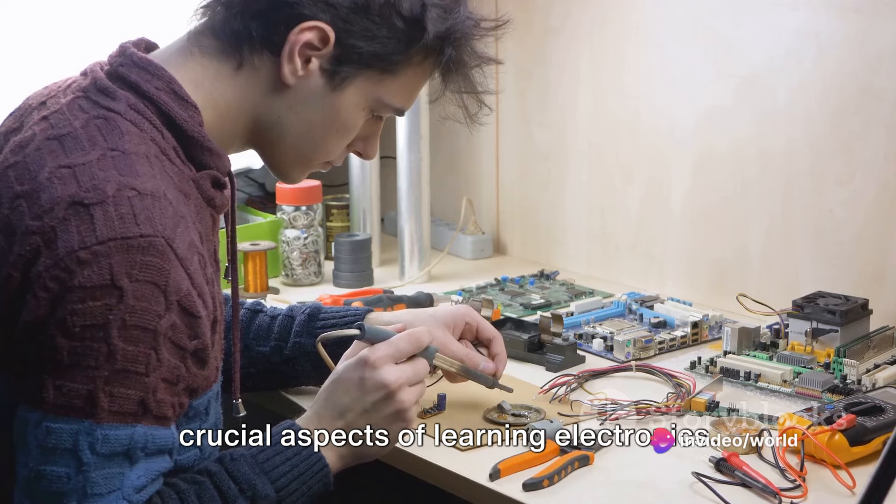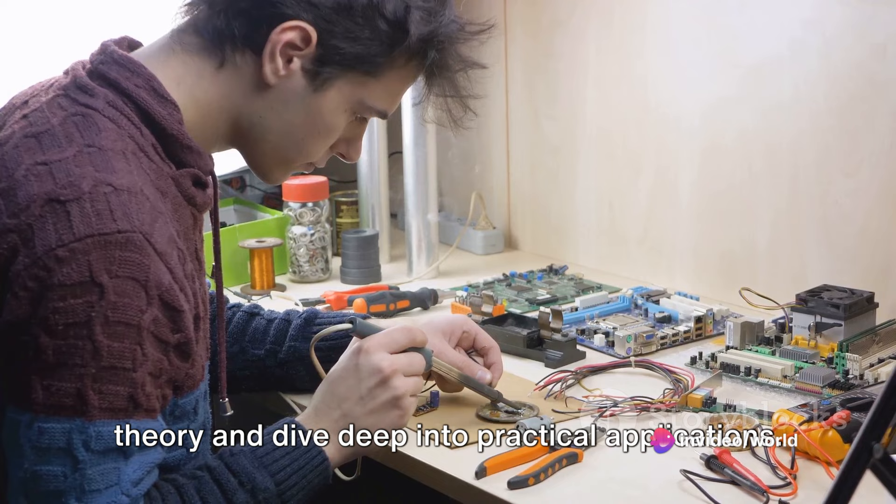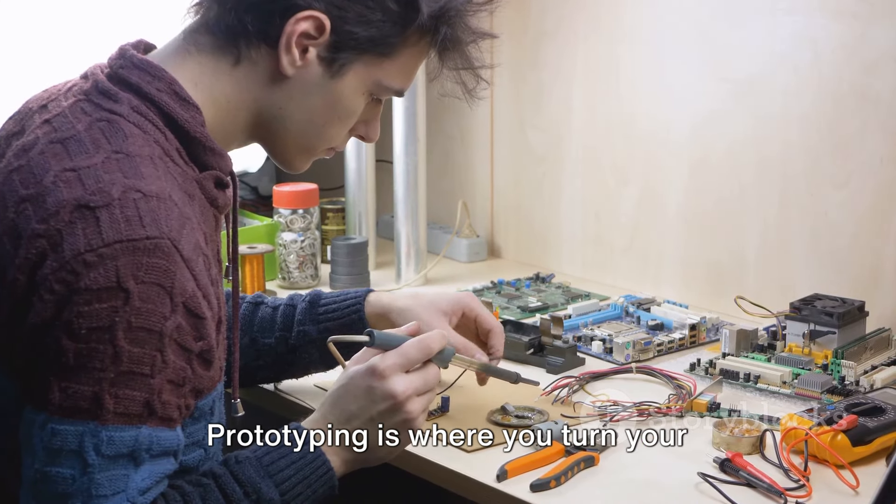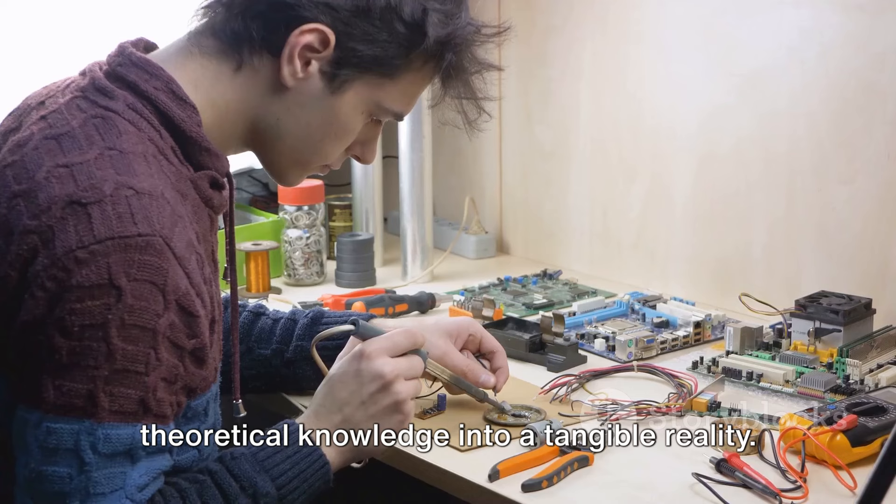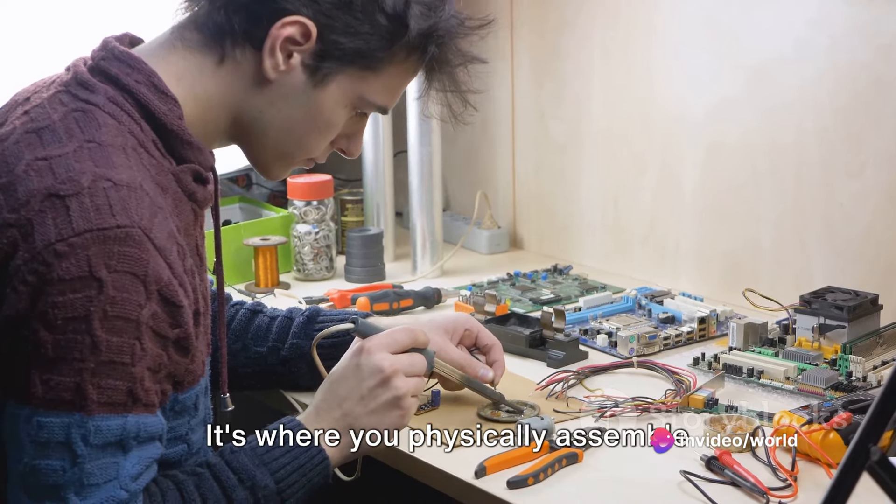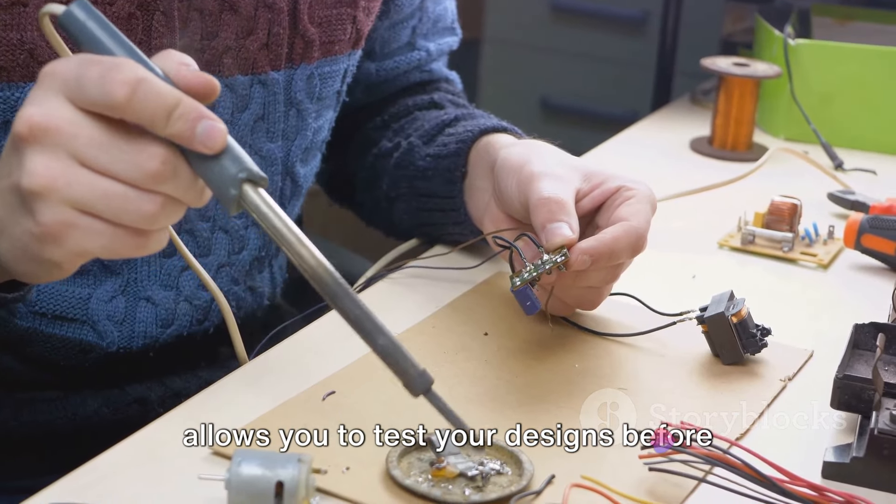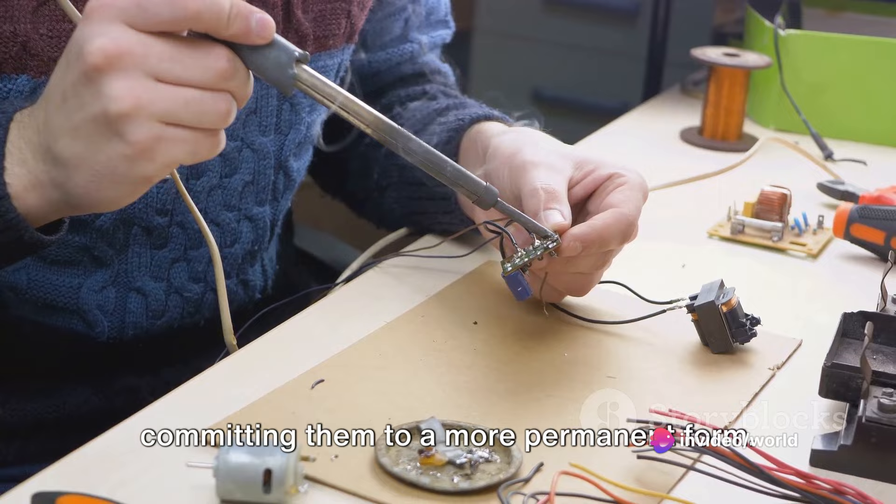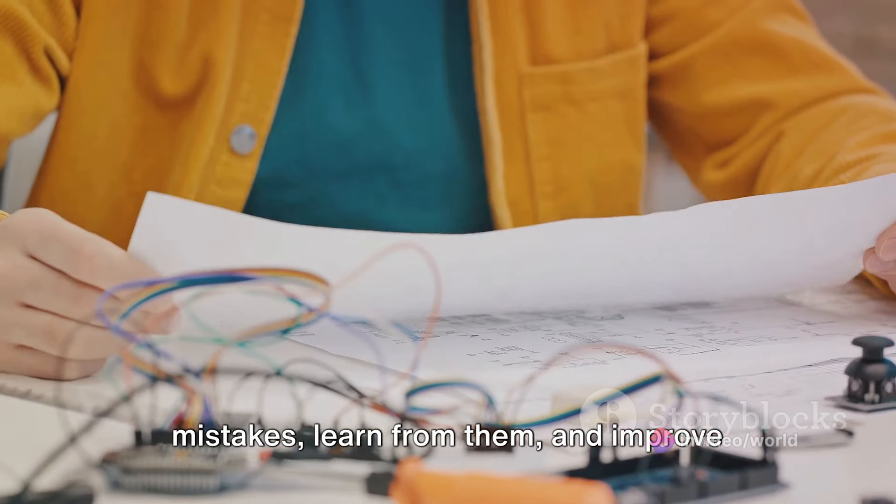It's time to get your hands dirty. Prototyping and schematics are two crucial aspects of learning electronics. They are the hands-on part of the learning process, where you go beyond the theory and dive deep into practical applications. Prototyping is where you turn your theoretical knowledge into a tangible reality. Imagine it as the first draft of your electronic masterpiece. Prototyping is where you physically assemble components on a breadboard or a similar platform to test how your circuit works in the real world. Prototyping is essential because it allows you to test your designs before committing them to a more permanent form.